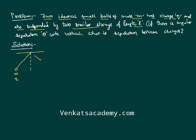This is another charge, again mass m. It is given that the strings have length L. Each side makes an equal angle theta with the vertical. Then what is the separation between these two charges? If each half-separation is x, what is the value of x, or equivalently the total separation 2x? That's what we need to solve.